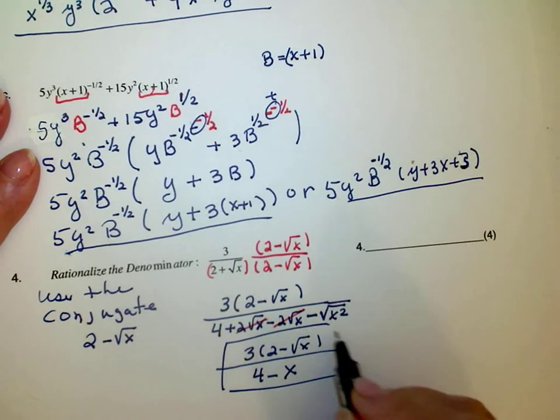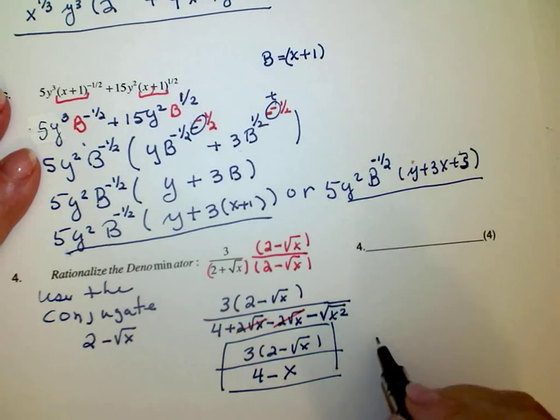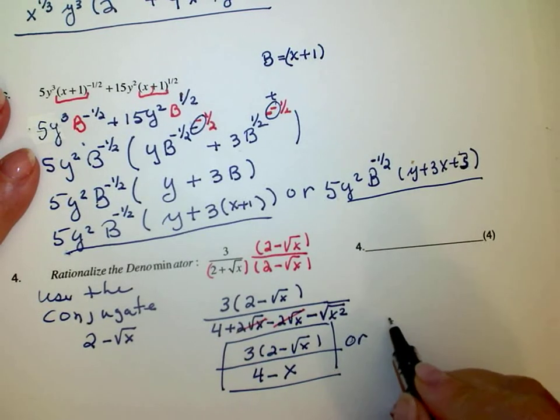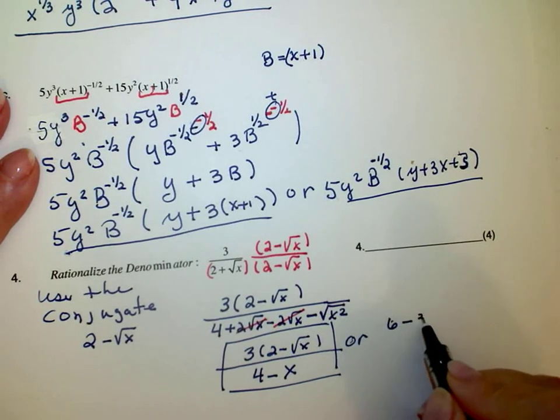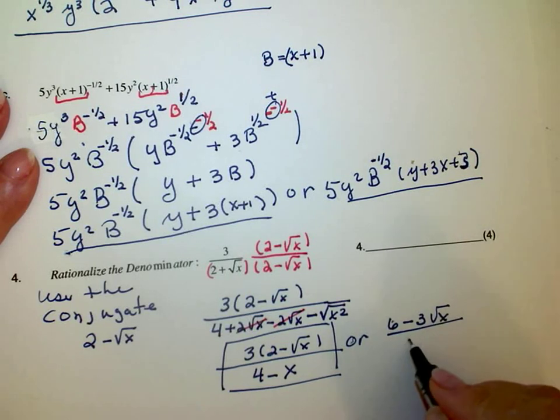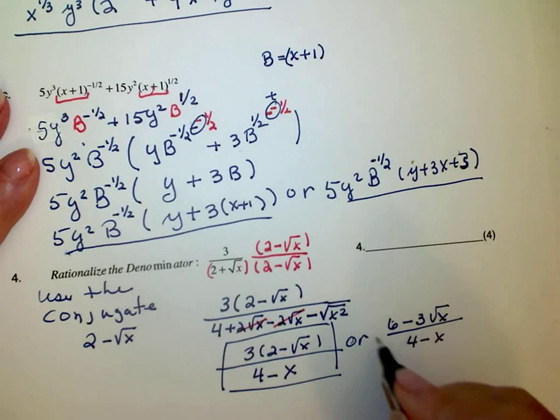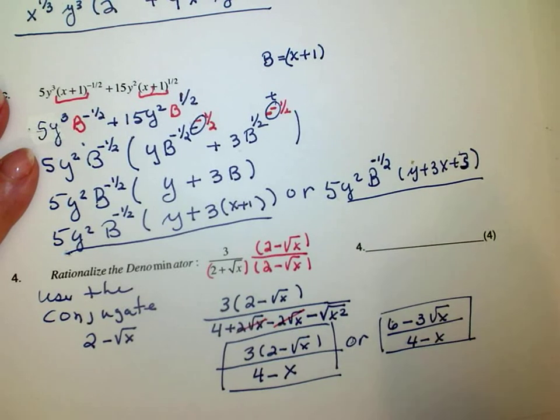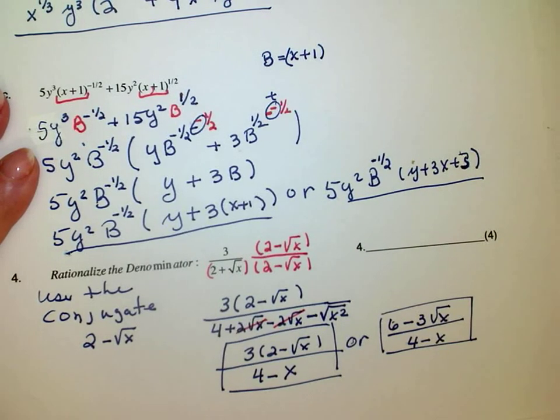That is a perfectly good answer. Or you could multiply through. This is 6 minus 3 square root of x all over 4 minus x. And that's also a perfectly good answer. Thank you.